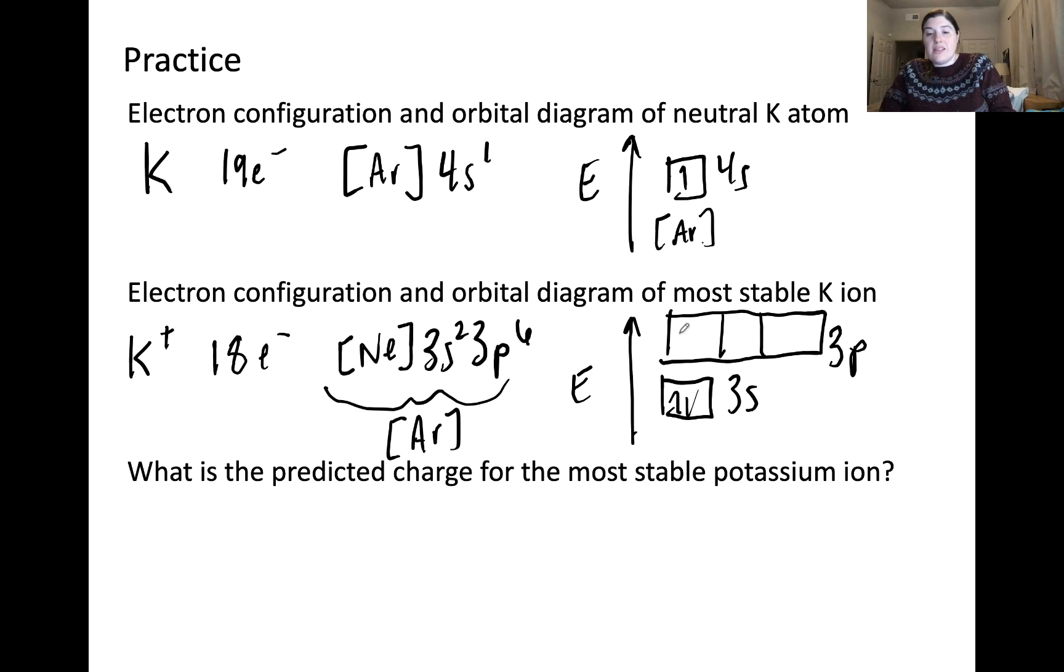So we can draw those out. And of course, we can't forget we have all of the electrons from neon down here. All right. All right. So the predicted charge for the most stable potassium ion would be plus one. And the reason for that is because it has a full valence shell.